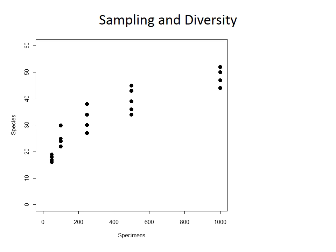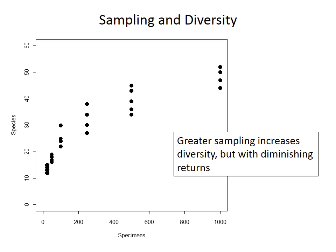This curve, which increases rapidly as we go from zero to 100 specimens, gradually slows down. Greater sampling does increase diversity, but there are diminishing returns — the curve becomes flatter because eventually, once we collect enough, we'll have recorded nearly the entire meta-community, and additional sampling will not uncover any more species.